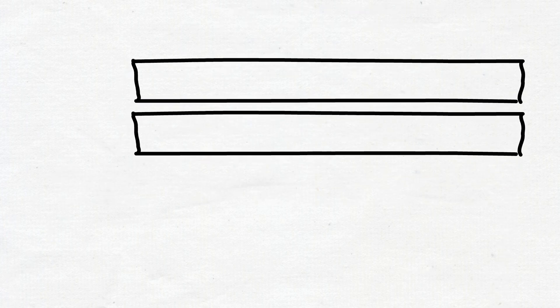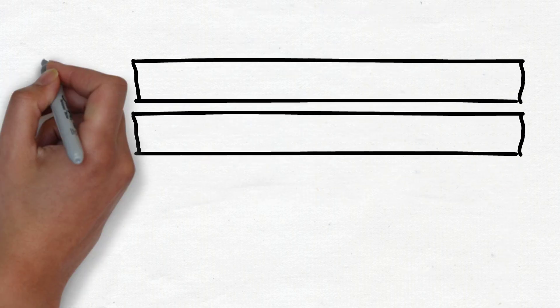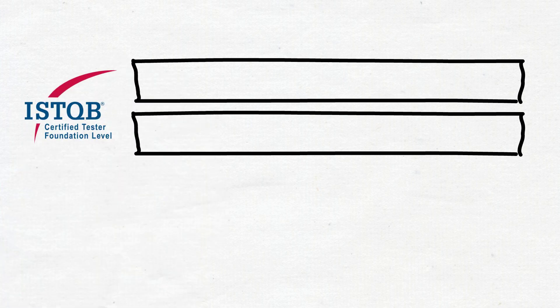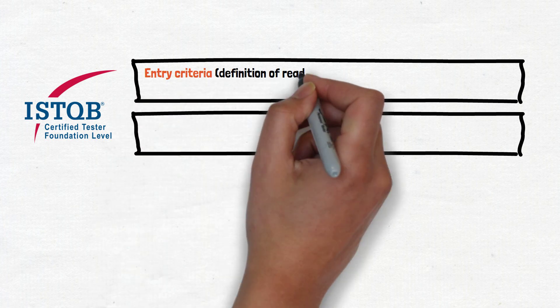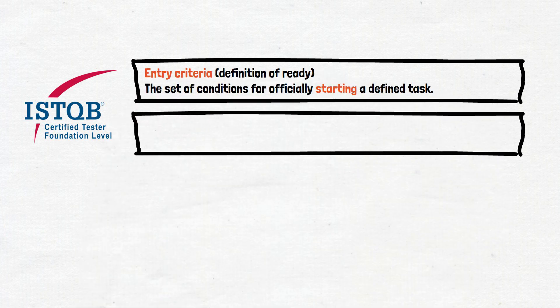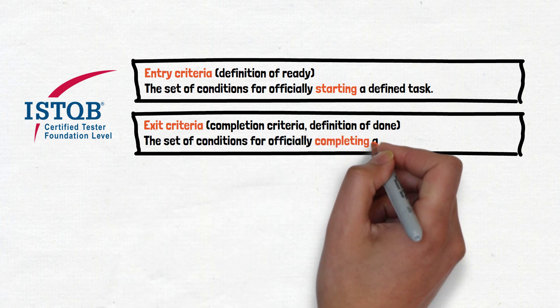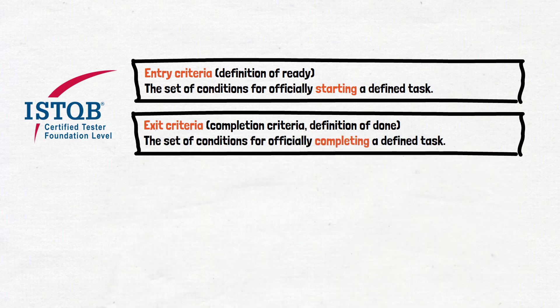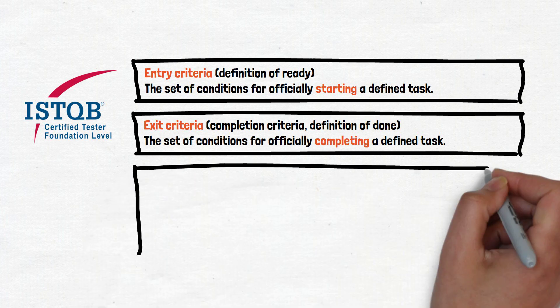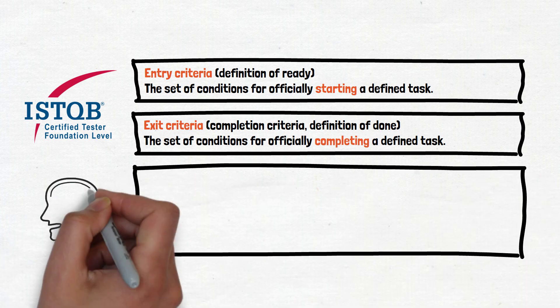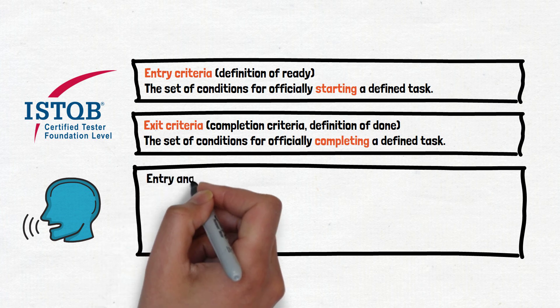We begin with an explanation given by ISTQB. The link to the ISTQB website will be provided in the materials for the video. According to the ISTQB, entry criteria are the set of conditions for officially starting a defined task, and the exit criteria are the set of conditions for officially completing a defined task. As you can see, the definitions are very vague — that's why they can be applied to any activity.